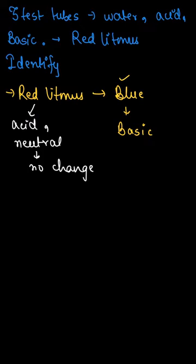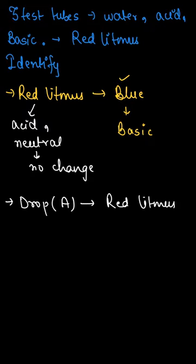Now we have to test them. First of all, we will take solution A and put a drop of this solution on the red litmus. If you notice that there is a change of color, then obviously it will be a basic solution. So amongst these three test tubes given to us, we will find one solution which is basic in nature, and we can identify this easily.